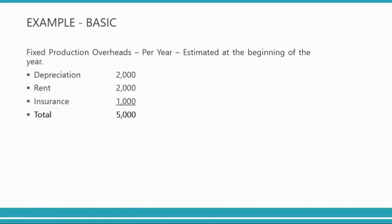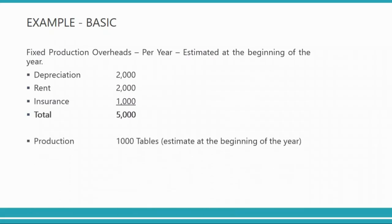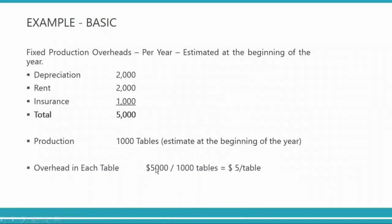This five thousand dollars is fixed overhead which you will pay for the entire activity; it is not related to any one unit of output but to total output. Let's suppose we manufacture tables — we have to calculate how much of this five thousand, one dollar or two dollars or ten dollars, we should add into the cost of making one table. If your estimated production is one thousand tables, then five thousand divided by one thousand gives five dollars per table as your overhead.